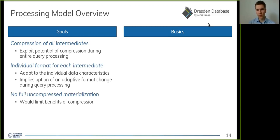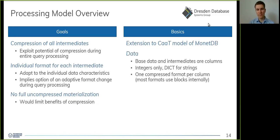As a foundation for our processing model, we adopted and extended the column-at-a-time model originally introduced by MonetDB, because it suits our needs of processing integer sequences very well. In our case, the data — whether base data or intermediates — are always of columnar form, and we assume all data are integer sequences. We assume that some kind of dictionary encoding has been applied prior to query execution for string columns. Furthermore, each column is represented in one compressed format, but most lightweight integer compression algorithms already subdivide the data they are passed in an algorithm-specific way — for instance into blocks — to adapt to local variations in data distributions.